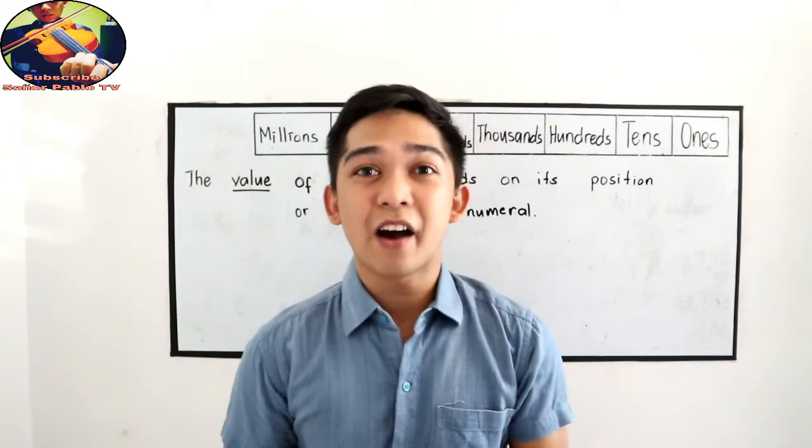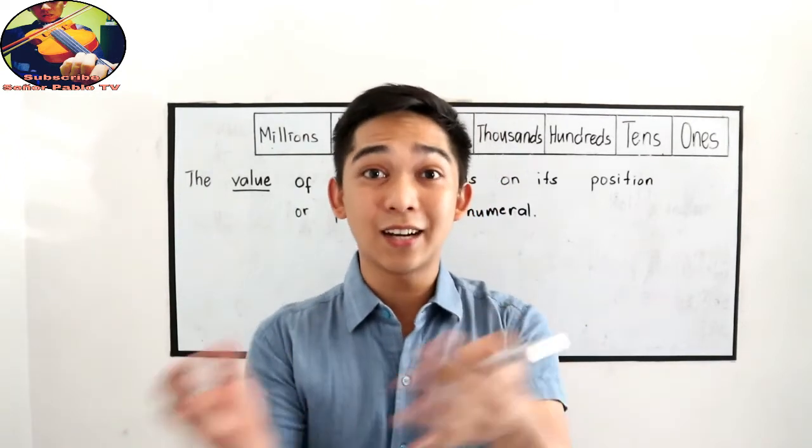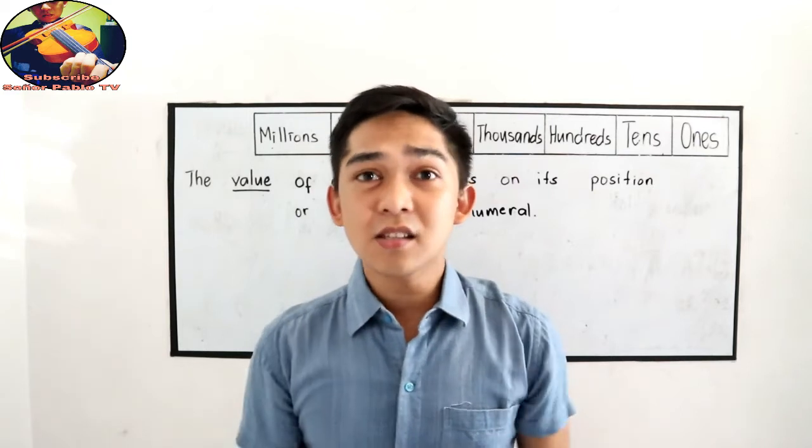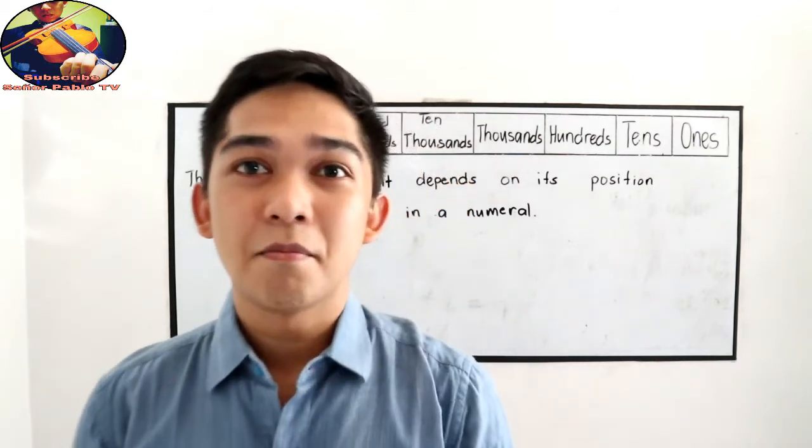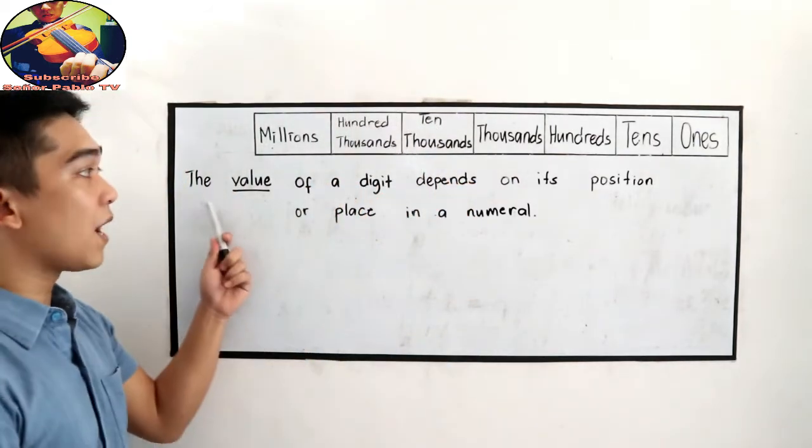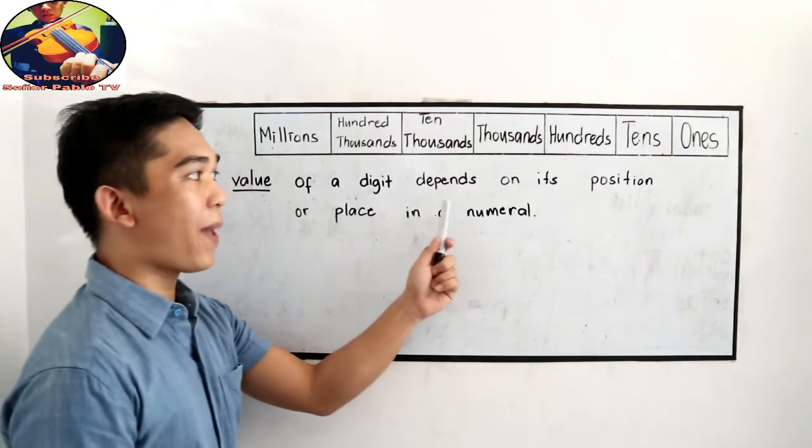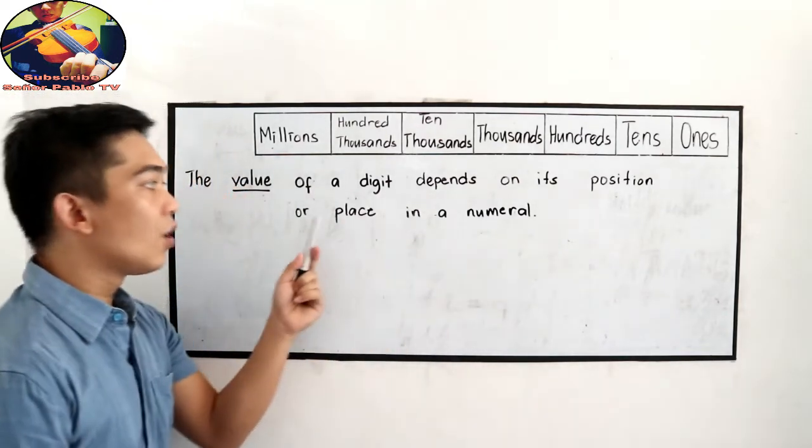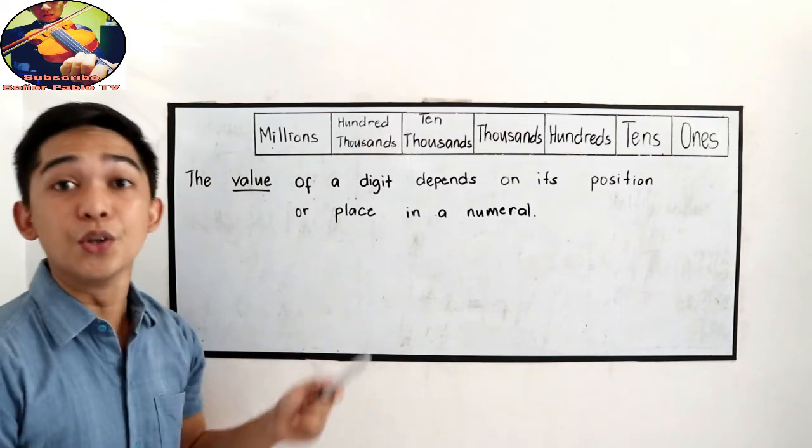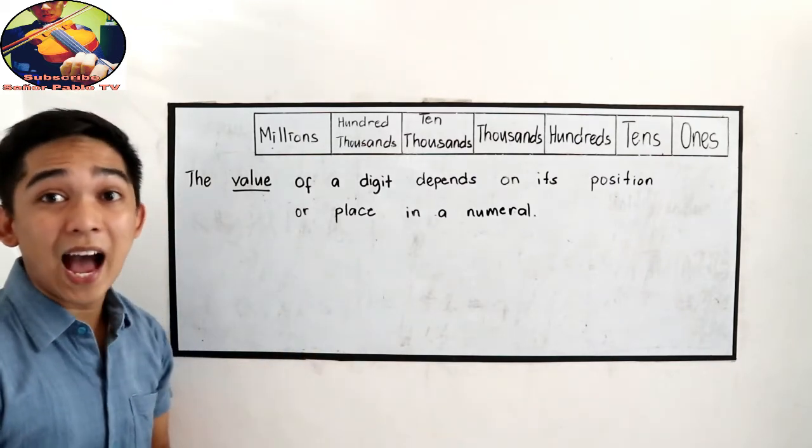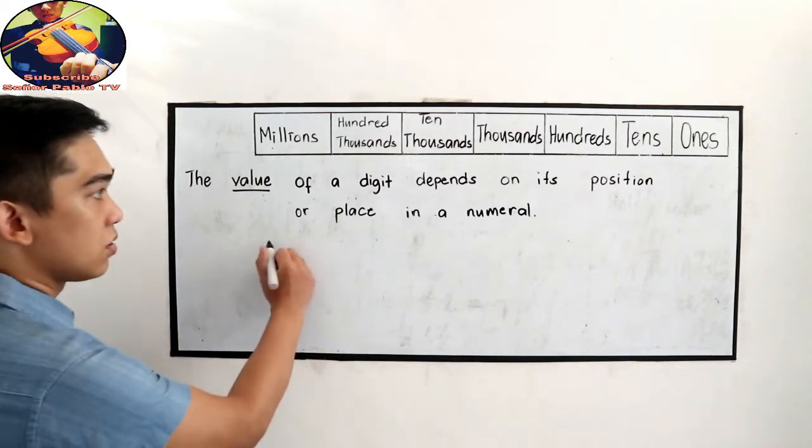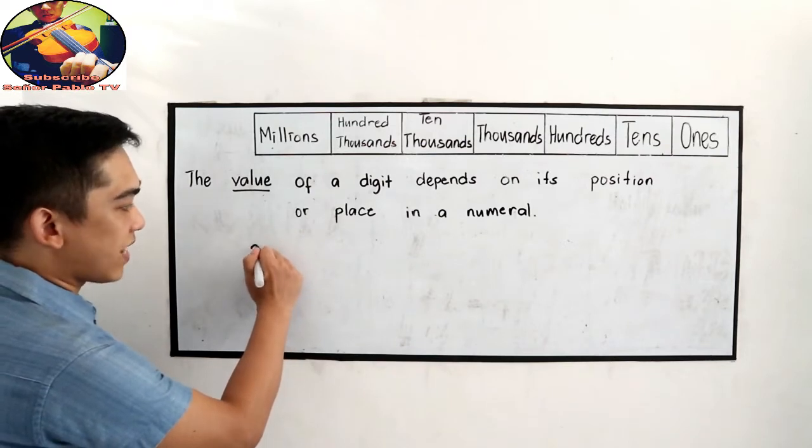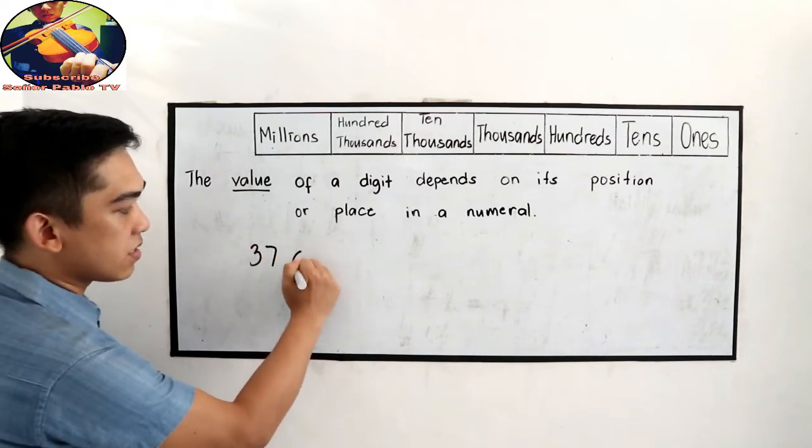Under our topic, we also have the period and the value. Let us start with the value. By definition, the value of a digit depends on its position or place in a numeral. Let's say we have a number, let's say 37,643.